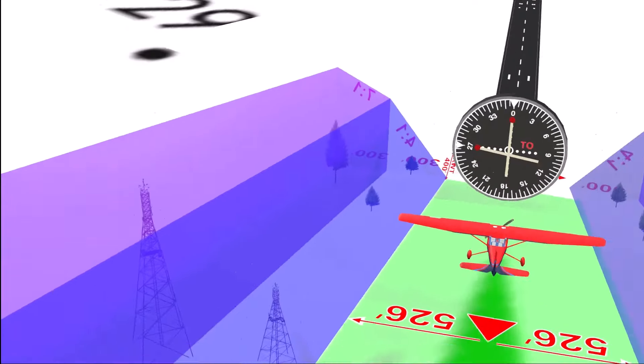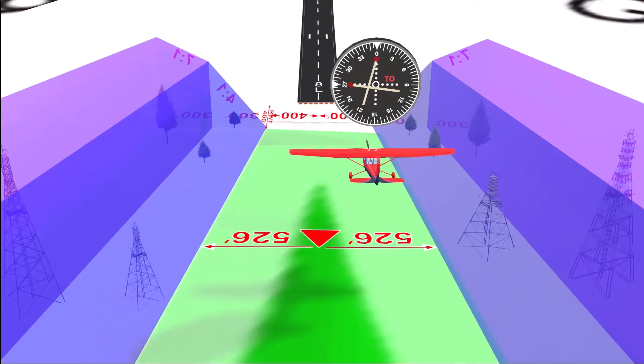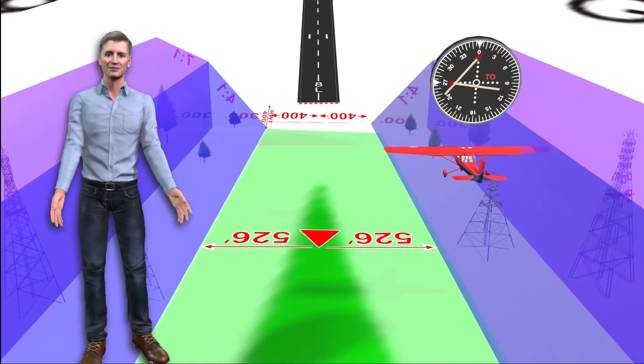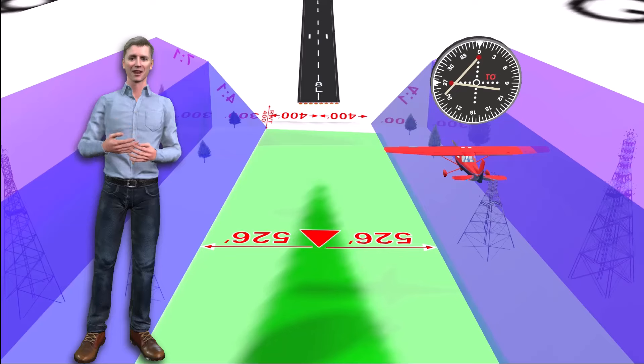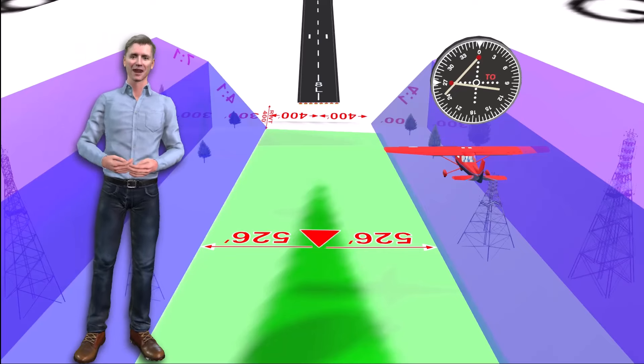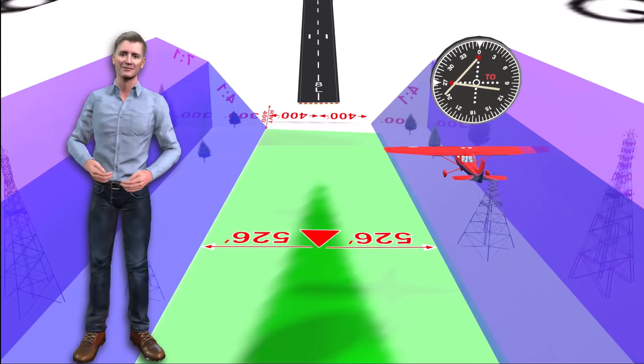Looking at your Omni display at decision altitude, each dot deflection at DA roughly represents 100 feet of lateral displacement from the course centerline. The unsettling conclusion here is that with a 5-dot deflection on your Omni display, you have moved uncomfortably close to the 4 to 1 rising sloped wall of obstacle-protected airspace.